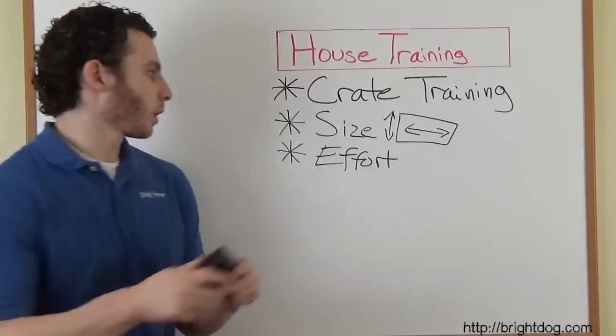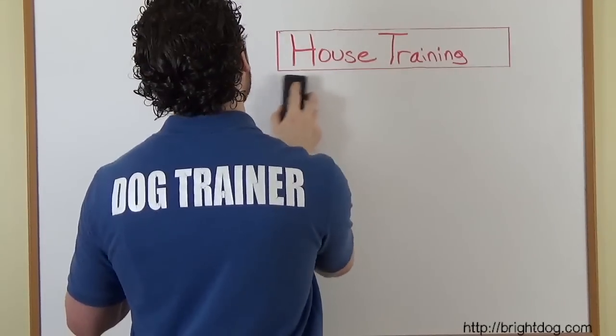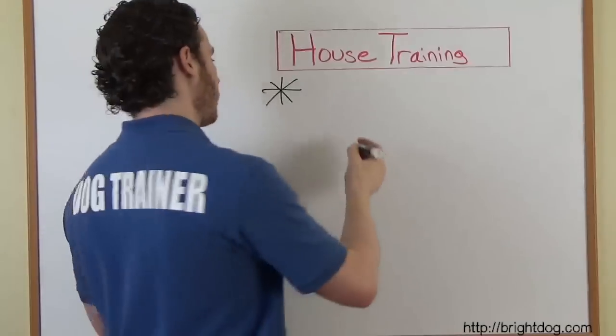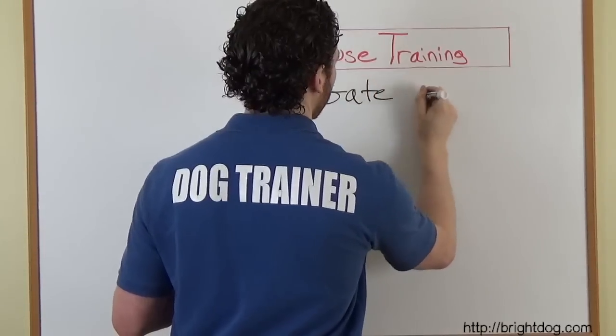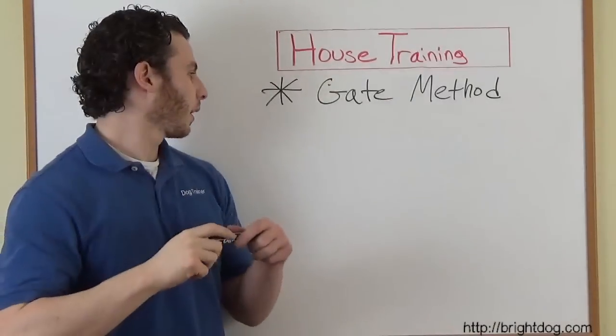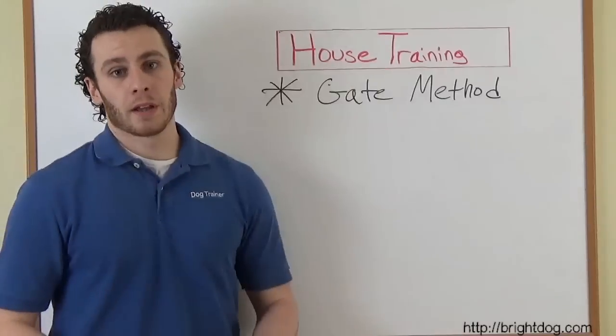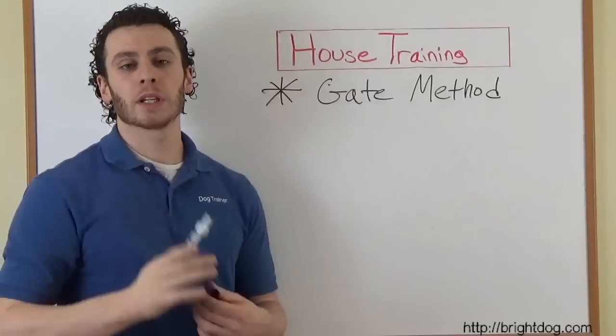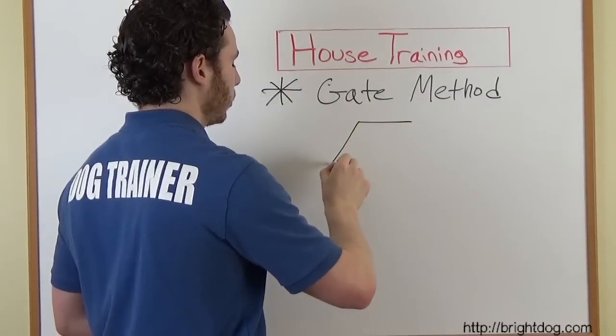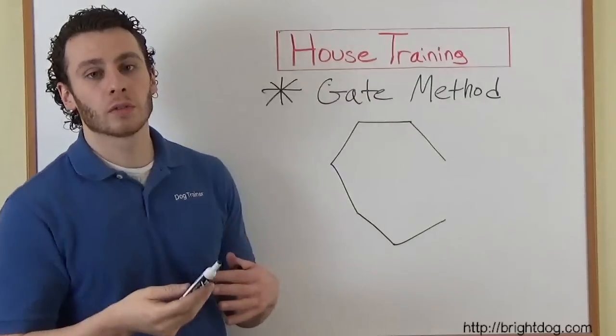The second method is what I prefer to do because it gives our dogs more freedom, it gives us humans more freedom, and it makes house training easier on us. Now, I don't have an official name for this method. I guess we can call it the gate method. And what we're going to do with this is you're going to set up a playpen or x-pen, they're called. They're like the metal barriers. I'll have links for these, but you're going to set up a big pen. And you can get different heights which is nice for people with big dogs instead of buying multiple crates. You buy one pen as big as it goes.